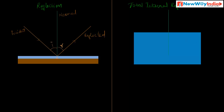In the case of total internal reflection, observe the diagram. This is the normal — perpendicular to the plane of the surface. When a light ray passes from a denser medium (the glass slab) to a rarer medium, it gets reflected back and deviates towards the same medium. When the angle of incidence is greater than the critical angle, the ray deviates back into the denser medium — this is called total internal reflection. This is the incident ray and this is the reflected ray, both in the denser medium.